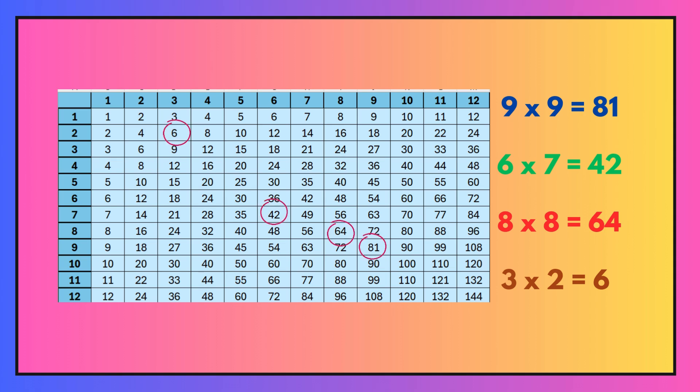Here are the answers. Nine times nine was 81. Six times seven is 42. Eight times eight, 64 and three times two is six.